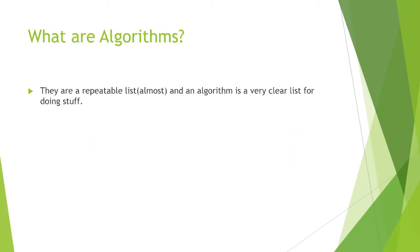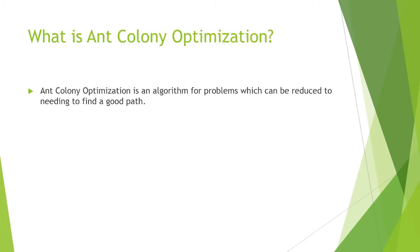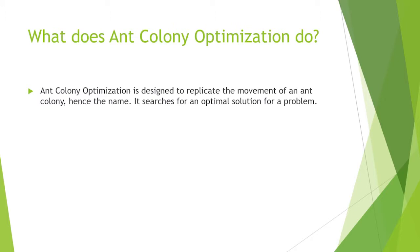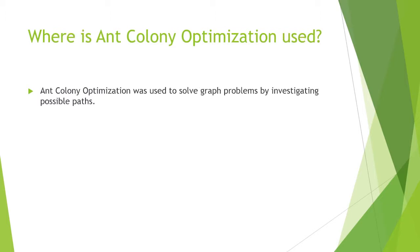What are algorithms? Algorithms are a repeatable list — a very clear list for doing stuff. Ant colony optimization is an algorithm for problems which can be reduced to needing to find a good path. It is designed to replicate the movement of an ant colony, hence the name, and it searches for an optimal solution. Ant colony optimization is used to solve graph problems by investigating possible paths.